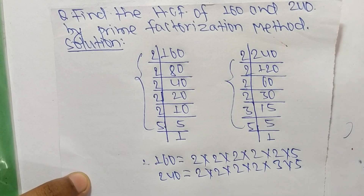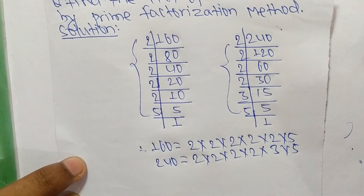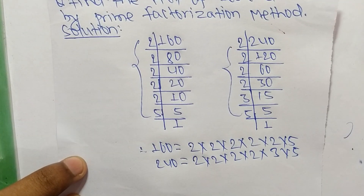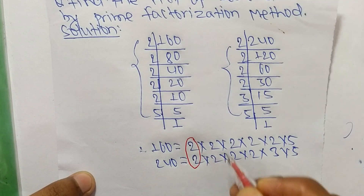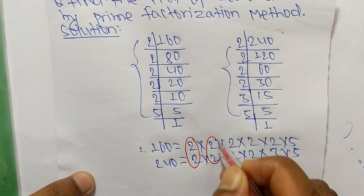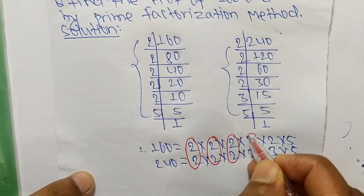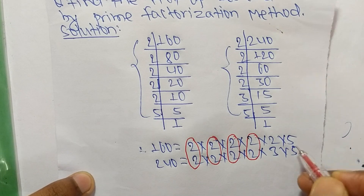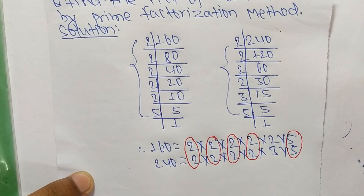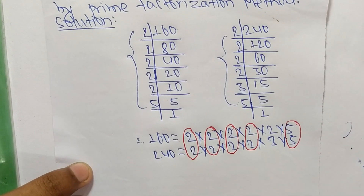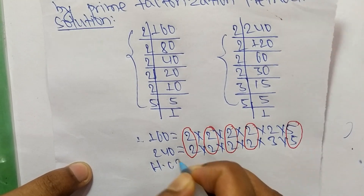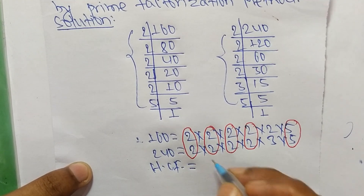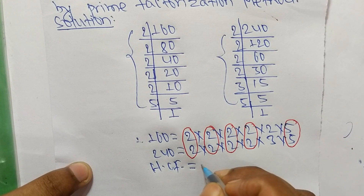Now we select the common factors from the prime factorizations. The common factors are 2, 2, 2, 2, and 5. The HCF is the product of these common factors.